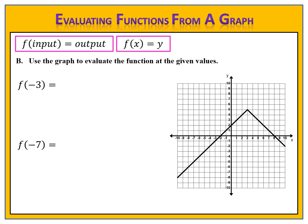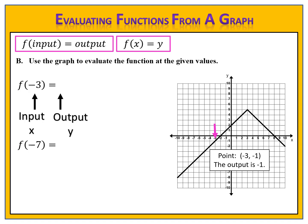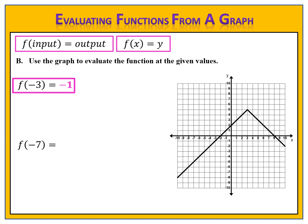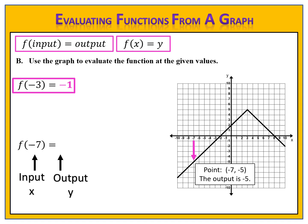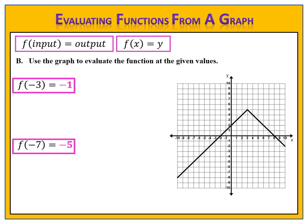Next, f of negative 3 equals something. F of input equals output — the input is negative 3 and we want to find the output. We go across the graph to where the input is negative 3 and find the point (−3, −1). The input is negative 3 and the output is negative 1, so f of negative 3 equals negative 1. For f of negative 7: we go to the x value of negative 7 and find the point (−7, −5), so f of negative 7 equals negative 5.